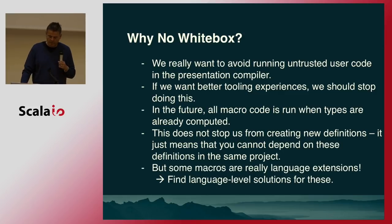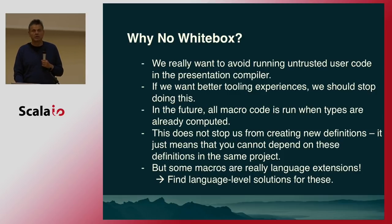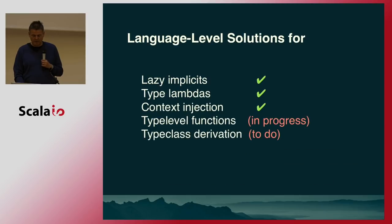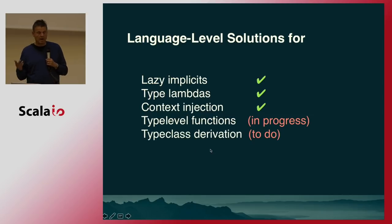Of course some macros are really language extensions — do we have to drop them? The answer is we will find language-level solutions for these. We have identified some of them: the lazy macro in Shapeless is already essentially subsumed by by-name implicits. Type lambdas, kind projectors, context injections, type-level functions are in progress, and type class derivation is to do.